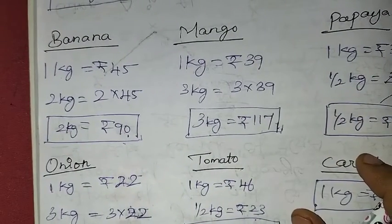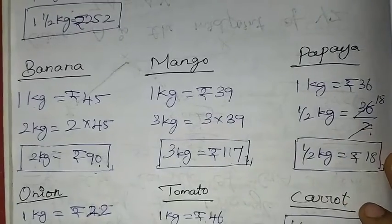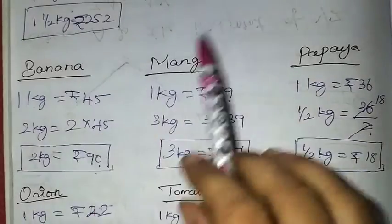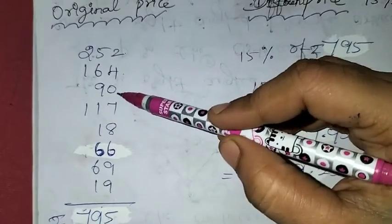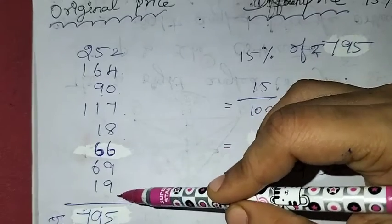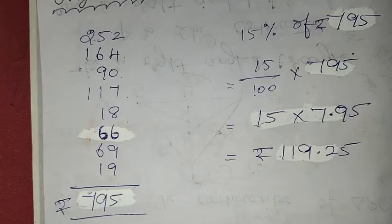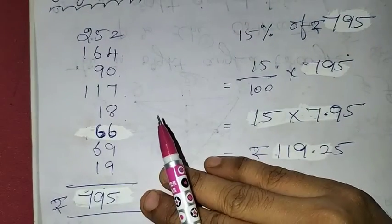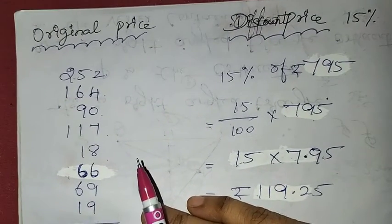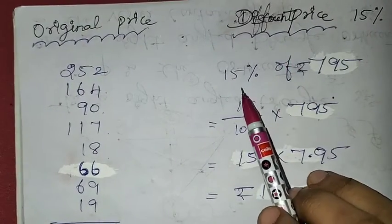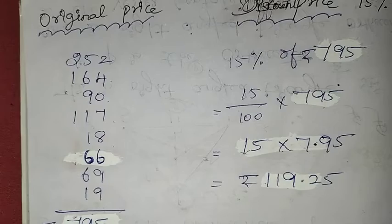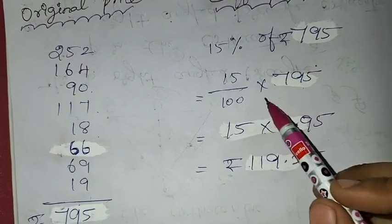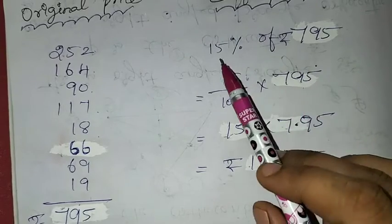Now we check the total price and apply the 15% offer. The original prices are: apple Rs. 252, pomegranate Rs. 164, banana Rs. 90, mango Rs. 117, papaya Rs. 18, onion Rs. 66, tomato Rs. 69, carrot Rs. 19. Adding all gives a total of Rs. 795. Now, 15% discount = 15/100 × 795.